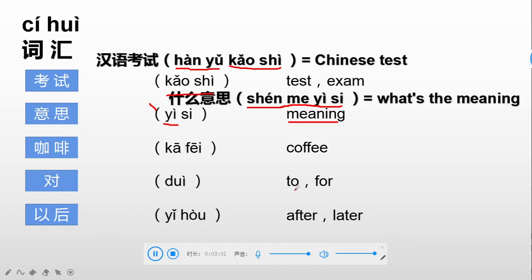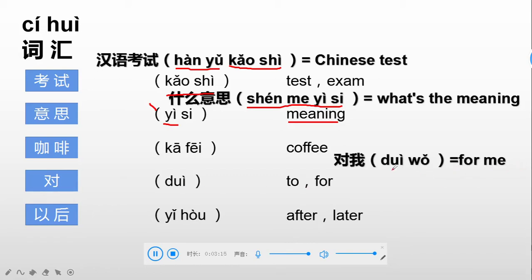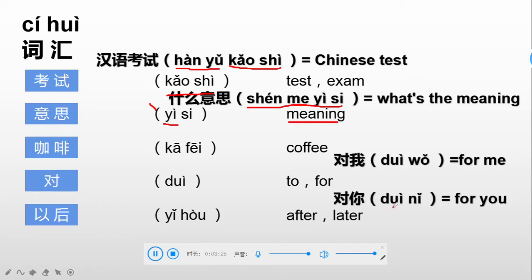Next, a phrase on 对 as a preposition. The first one: for me — 对 is 'for', 我 is 'me', so for me we say 对我. Next one: for you, 对你, that means for you.